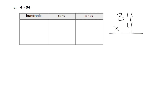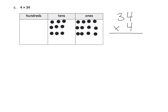We're going to model 34. We've got 3 tens and 4 ones — that's what 34 looks like. This problem says we're supposed to have 4 groups of 34. So we need another group, and another group, and a fourth group. Now we have our 4 groups of 34.